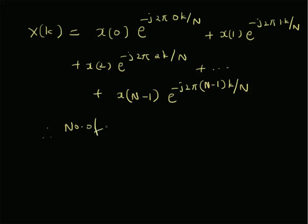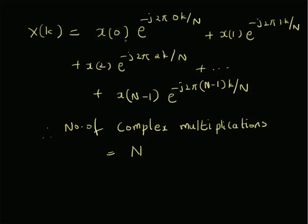The number of complex multiplications will be equal to N, because there are N terms and each term has one product — the product of the time-domain value x(n) and the basis function e to the minus j two pi nk over N. So there is only one product in each term, giving N complex multiplications for a given k.